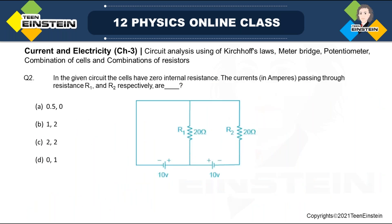The next question is interesting. Look at the given circuit; the cells have no internal resistance. We have to find the currents passing through R1 and R2 respectively. I will assume current I1 is drawn from one cell and I2 from the other battery. Applying Kirchhoff's Current Law, I consider two loops: loop L1 and loop L2. Applying KVL for loop 1, the current through R1 is I1 + I2, so (I1 + I2) × R1 = 10 volts. This is equation number 1.